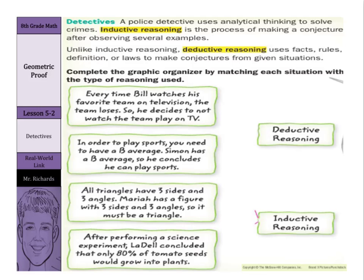Let's look at these four examples and see which type of reasoning each represents. Every time Bill watches his favorite team on television, the team loses — must be a Browns fan — so he decides not to watch the team play on TV. He's using examples, observing something that happens and making a conjecture, so that is inductive reasoning.